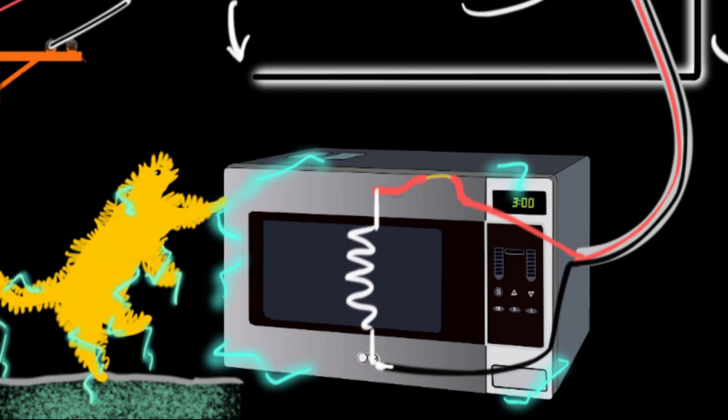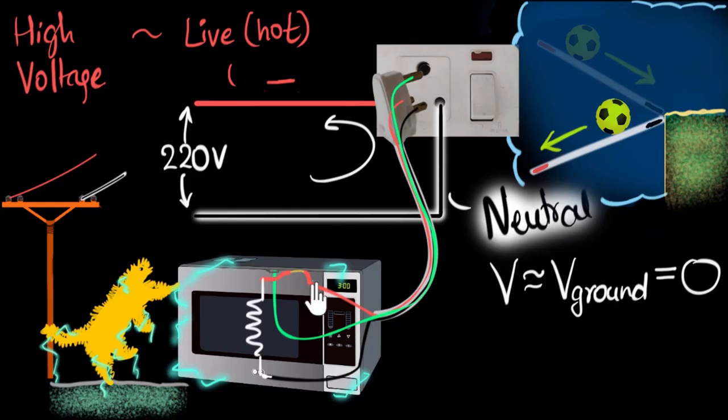That's where a third wire comes into place. There will be a third wire, which is usually green in color, which is directly connected to the metallic body, and it goes all the way to the plug, comes out of the third pin.